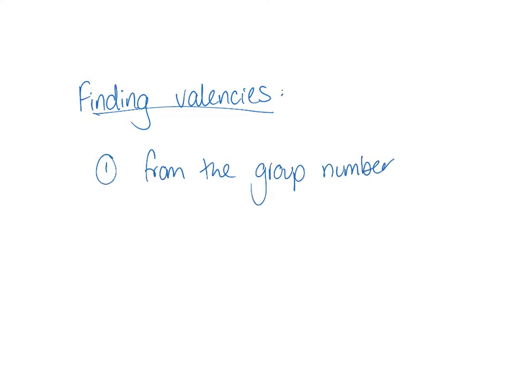Number one: you can find the valency of an element from the group number if it has a group number. So for example, if the element was in group one it would have a valency of one, if it was in group five it would have a valency of three, and so on. Hopefully you wrote those numbers at the top of your periodic table on Monday.